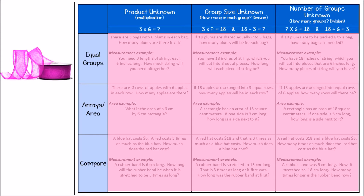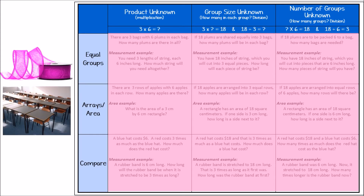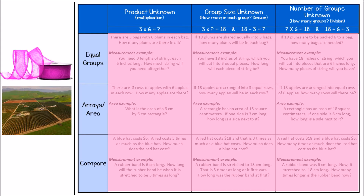An array problem might be one where we are finding the total number of desks in equal rows, or determining how many desks are in each equal row. An example of an area problem might be about a plot of land with an area of 32 acres — if we know one side length, we'd be looking to find the other side length. With equal groups, arrays, and area, we are considering one total amount: a total amount of candy, a total amount of desks, a total amount of land.